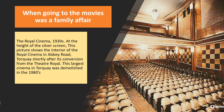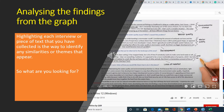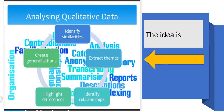Analyzing the findings from the graph: we want to analyze the findings and compare with other members of the group. Highlighting each interview or piece of text collected is the way to identify any similarities or themes that may appear. The idea is to identify similarities, extract themes, identify relationships, highlight differences, and create generalizations — that is the basic concept of analyzing qualitative data.